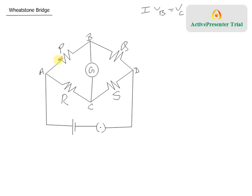If potential at B equals potential at C, then the potential difference between A and B and between A and C will be the same. For example, if A is at 50 volts and B is at 20 volts, the difference is 30. Since C must also be at 20 volts, the potential difference between A and C is also 30. So potential difference across P equals potential difference across R.